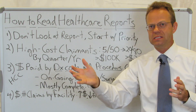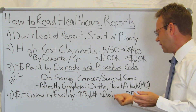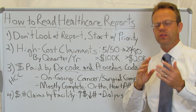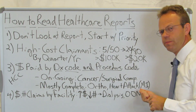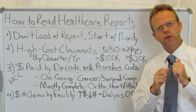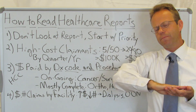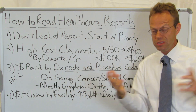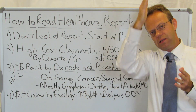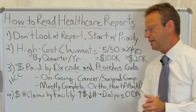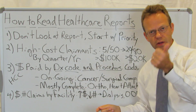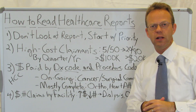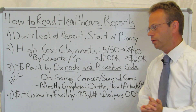Heart attacks — MIs or myocardial infarctions — are similar. They'll have an event hospital stay, maybe an ICU stay, but because of stents or bypass surgery, many patients do pretty well afterwards. So those are often fairly discrete events. You'll want to know this for modeling your costs going forward, and also to think about what you as an employer can do for other high-cost claimants in these categories.